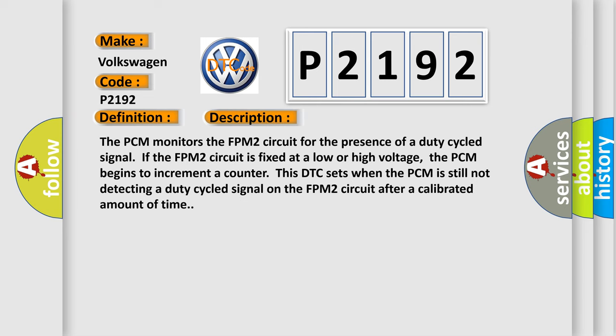The PCM monitors the FPM2 circuit for the presence of a duty cycled signal. If the FPM2 circuit is fixed at a low or high voltage, the PCM begins to increment a counter. This DTC sets when the PCM is still not detecting a duty cycled signal on the FPM2 circuit after a calibrated amount of time.